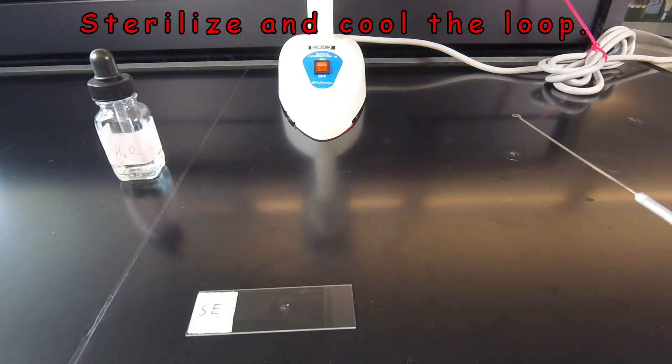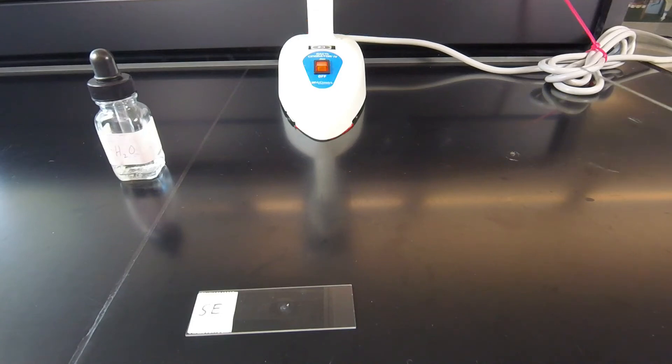And then at this point we have to wait for the inoculating loop to cool again. Because if we take the hot loop and put it in the water we're going to spatter the water all over us. So we have to either hold it in the air for 20 or 30 seconds or we could also stick it in the agar to cool, which I'm going to do just to speed up the video a little bit.